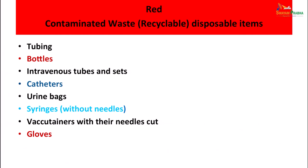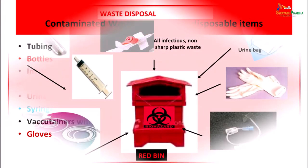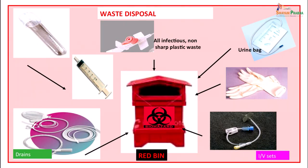The red bag is used to collect contaminated but recyclable disposable items: tubings, glass tubings, rubber tubings, bottles, IV tubes and sets, catheters, urine bags, syringes, vacuum trainers, and gloves. All these are collected in the red bin and are reusable items — syringes, glass tubings, gloves, etc.